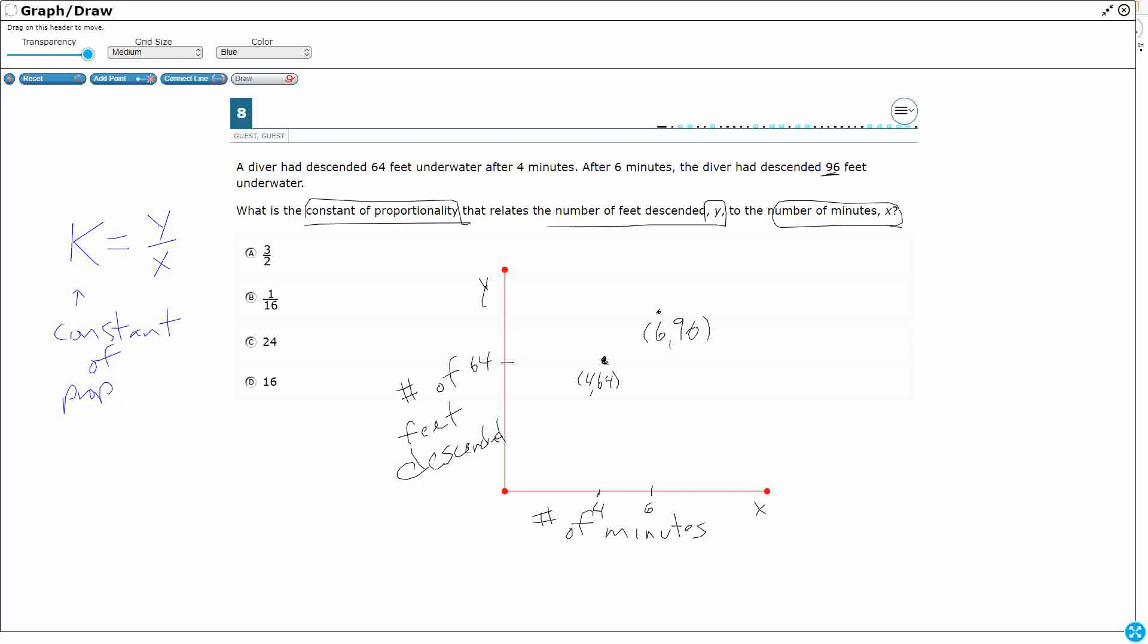In other situations, we might call it the rate, rate of change, even slope. We might represent it with the letter m rather than the letter k as we move on through the years. But really what we're trying to figure out is how much difference is there between these two points. And you notice we've got this: y over x.